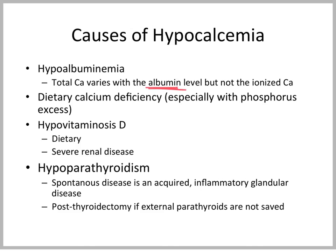Usually it takes pretty severe renal disease before this occurs. The lack of PTH, which can occur as a spontaneous disease called hypoparathyroidism, is an acquired inflammatory glandular problem. Or, perhaps more commonly, when we do a thyroidectomy in a hyperthyroid cat and don't do a good job of preserving the external parathyroids — there are two of them — preserving them, even by putting the parathyroid back under the skin even if the blood supply is disrupted, matters. Failure to do so will cause low PTH and hypocalcemia.